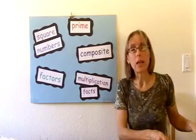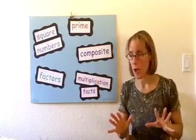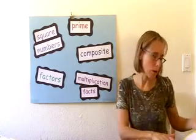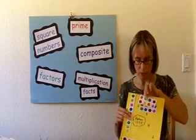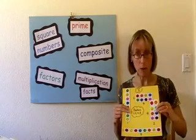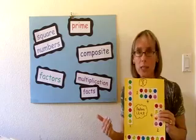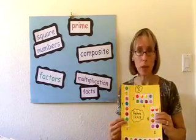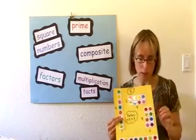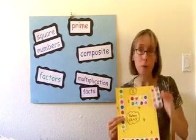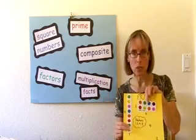In fourth and fifth grade, we take it up a level and introduce more vocabulary. Remember when we talked about rectangles being congruent? You can see this rectangle is congruent to this one, even though one is a two by four and the other is a four by two. That represents the commutative property of multiplication, which states that the order that the factors are multiplied does not matter — two times four and four times two both give you eight. But for the purpose of our fourth and fifth grade activity, we're going to count those as one rectangle.